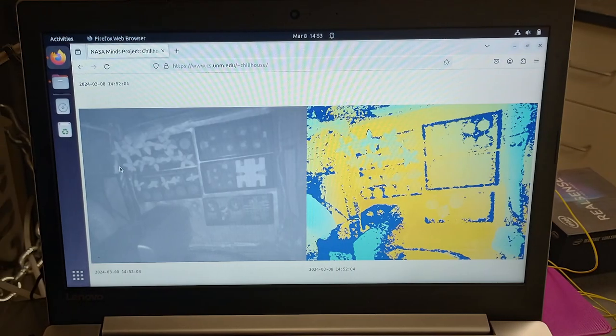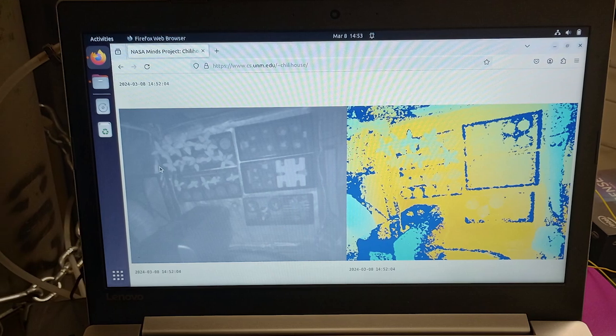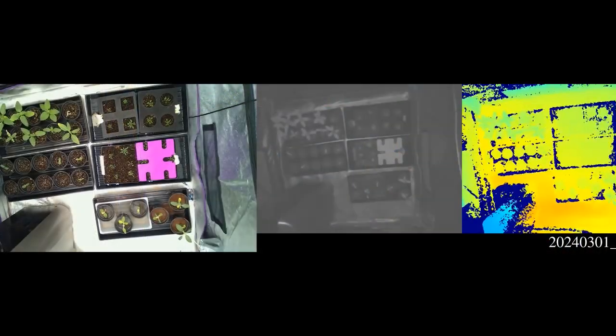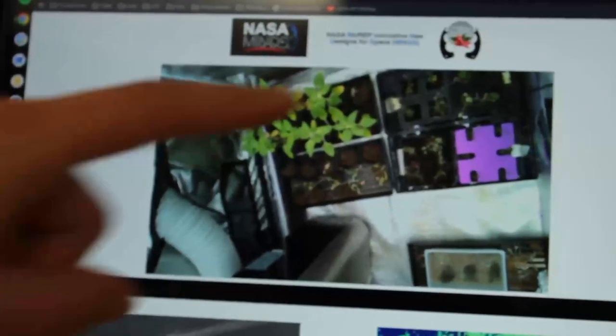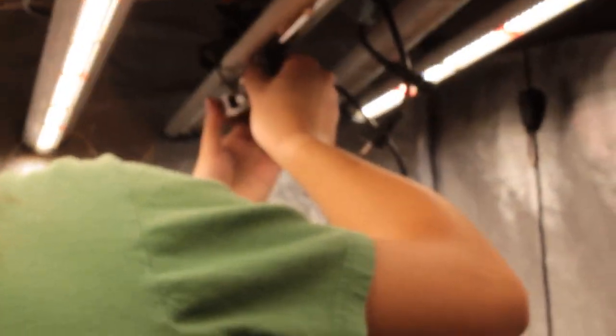For monitoring the plant's growth and health, we decided to use RealSense LiDAR cameras that had three different image types: RGB, infrared, and point cloud, otherwise known as depth perception. With this multifaceted camera, we were able to thoroughly monitor the plant's health and growth without constant intervention.